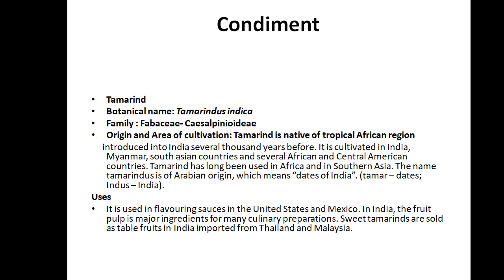Tamarind is of Arabian origin — in Arabic the word means 'dates of India.' It is used as a flavoring sauce in the United States and Mexico. In India, the fruit pulp is a major ingredient in culinary preparations like rasam.